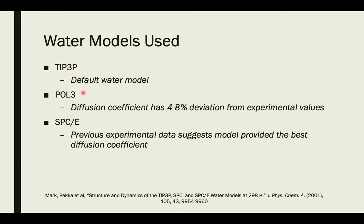The Pol3 water model we used because previous experimental data stated that the diffusion coefficient has a 48% deviation from experimental values, which is much less than many other water models. The third one we used was the SPC-E water model because previous experimental data suggests the model provided the best diffusion coefficient out of a few different water models compared in the research.